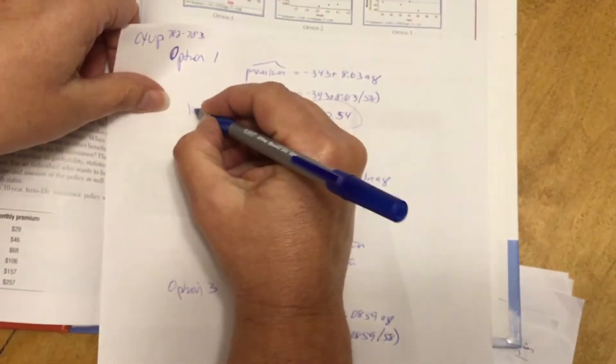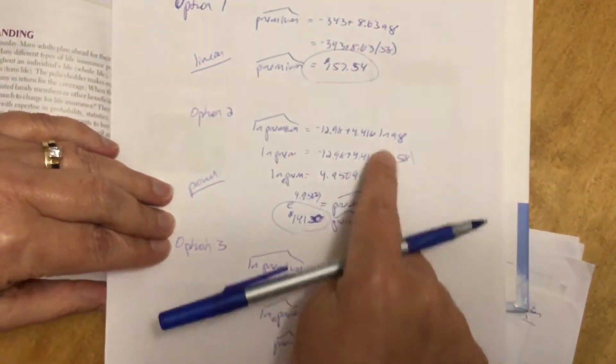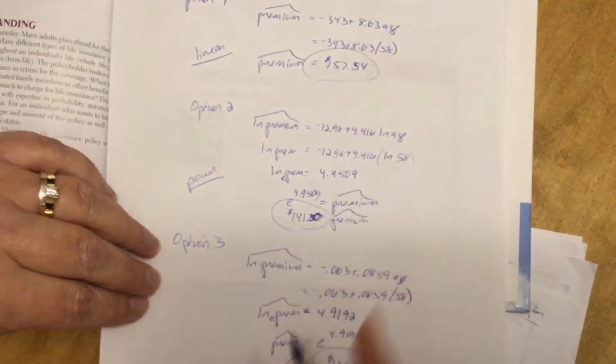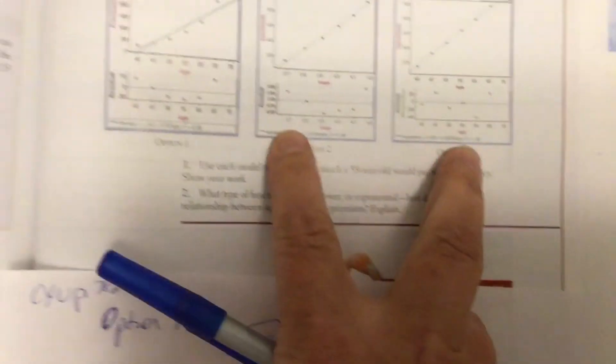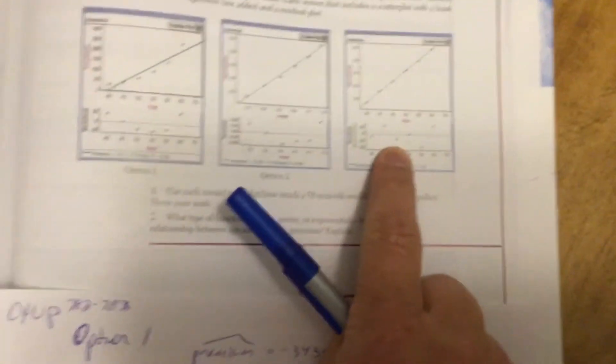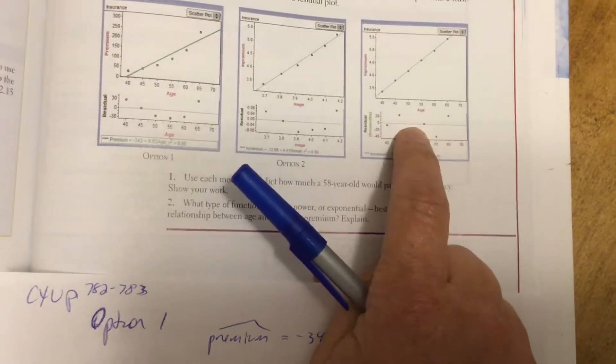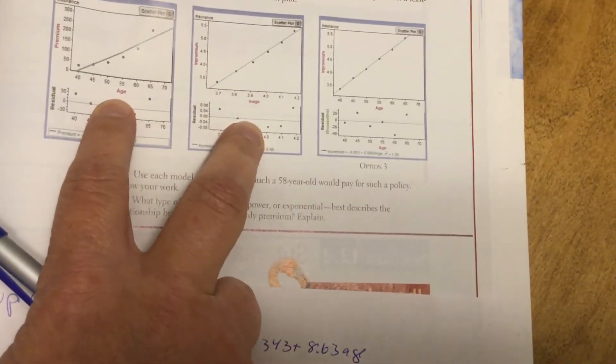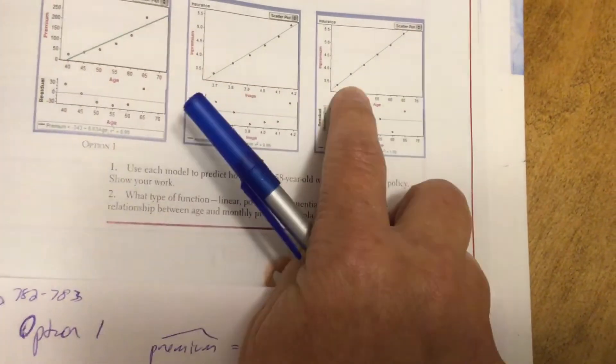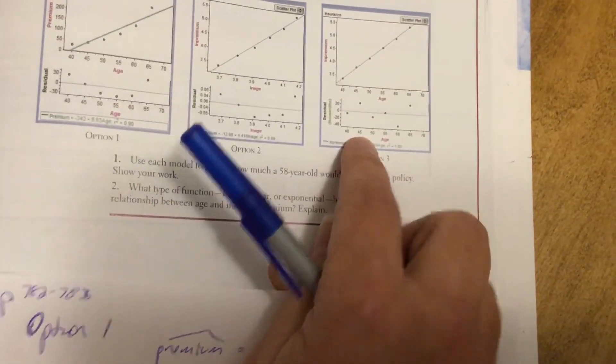Well, this one was the linear model because I didn't transform anything. This is the power model because I transformed both variables, and this one is the exponential model because I only transformed the response variable. So this is when we're just going to look at the residuals and look at the r-squareds, and we can calculate the rs. So clearly by the residuals, this one's the best because it's the most scattered. This is a distinct pattern, that's a distinct pattern, so they're not very good.